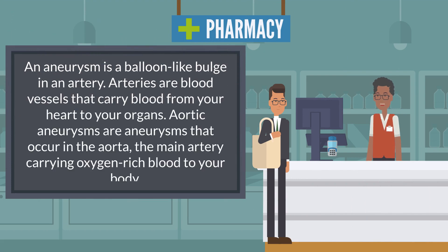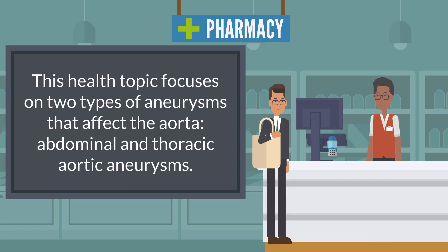An aneurysm is a balloon-like bulge in an artery. Arteries are blood vessels that carry blood from your heart to your organs. Aortic aneurysms are aneurysms that occur in the aorta, the main artery carrying oxygen-rich blood to your body. This health topic focuses on two types of aneurysms that affect the aorta: abdominal and thoracic aortic aneurysms.